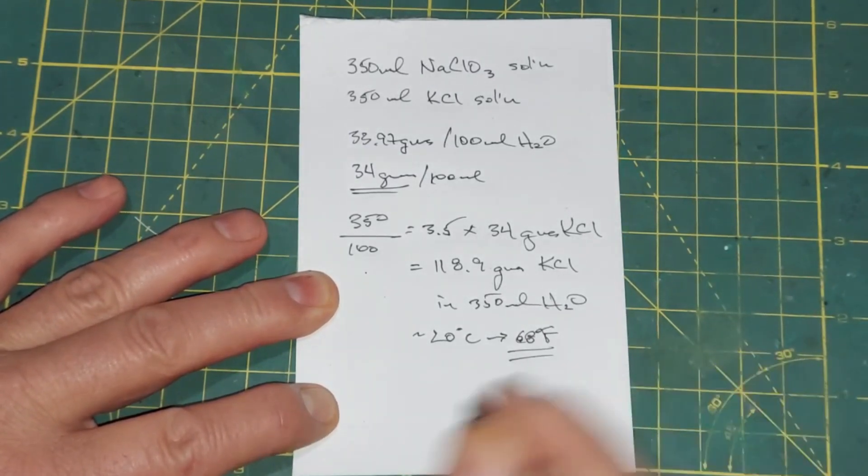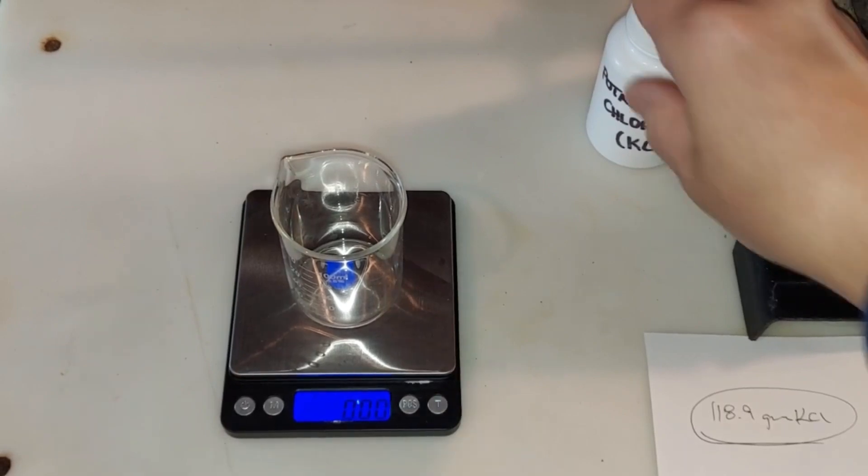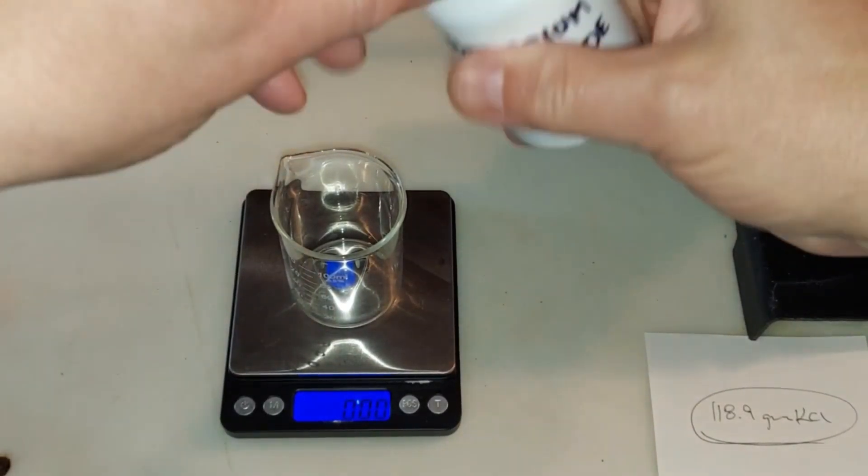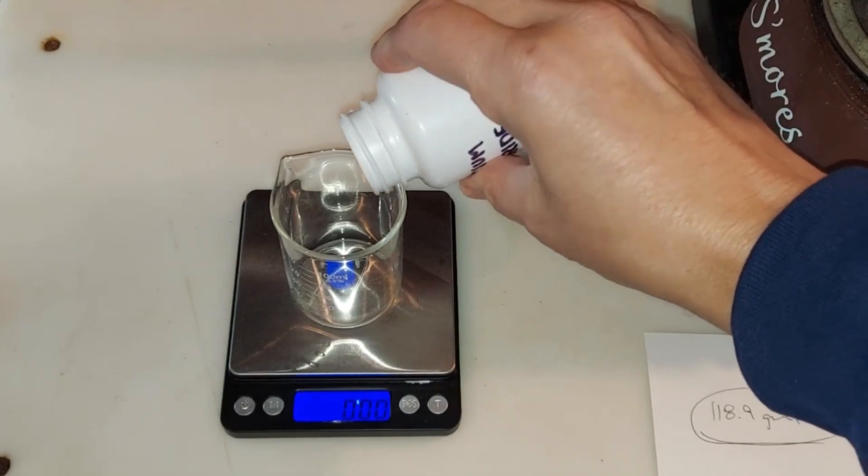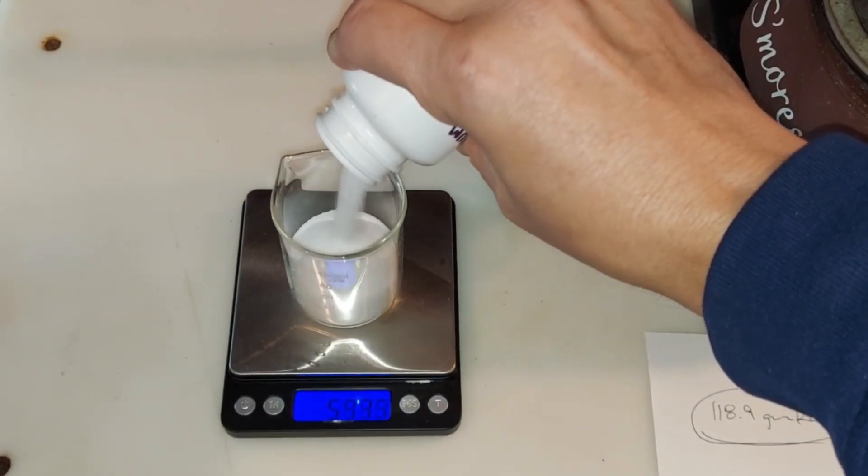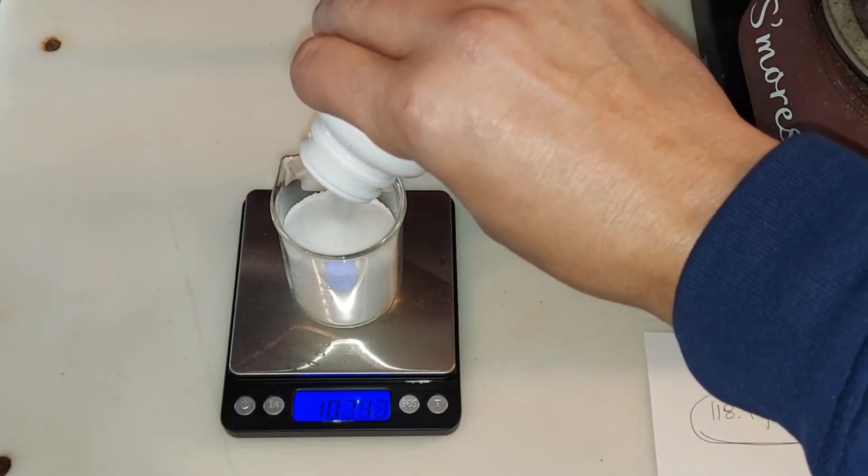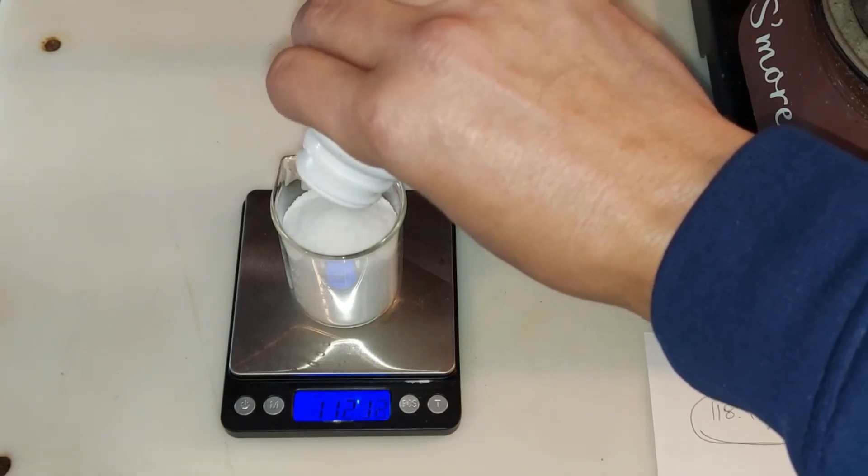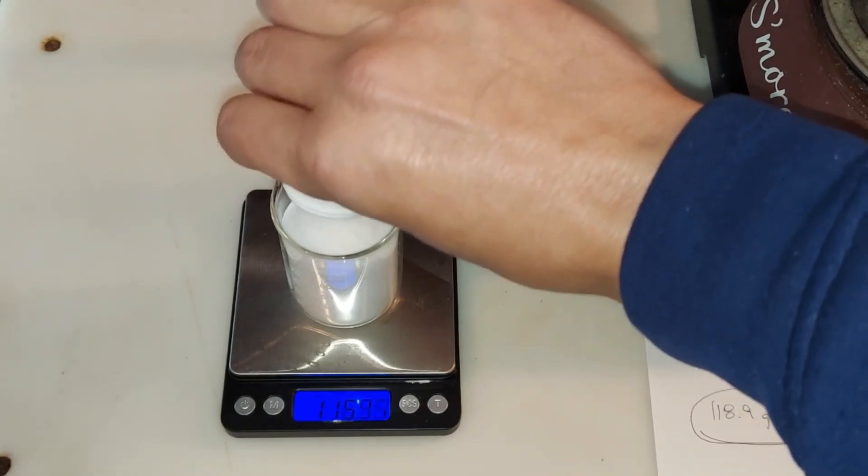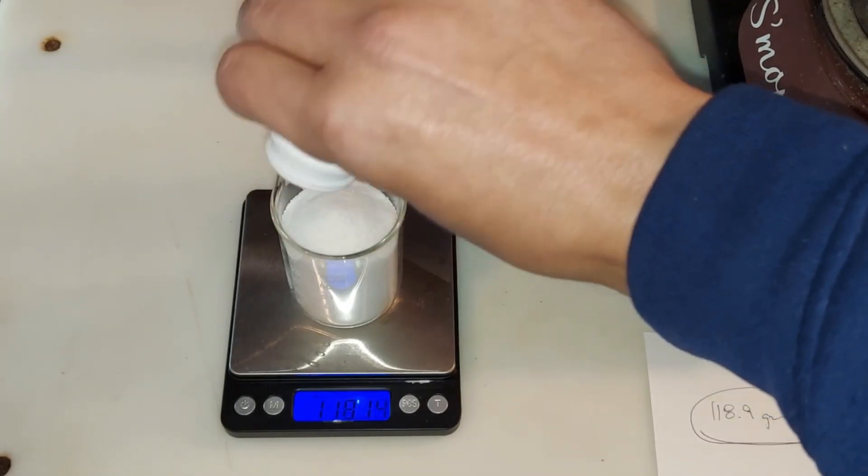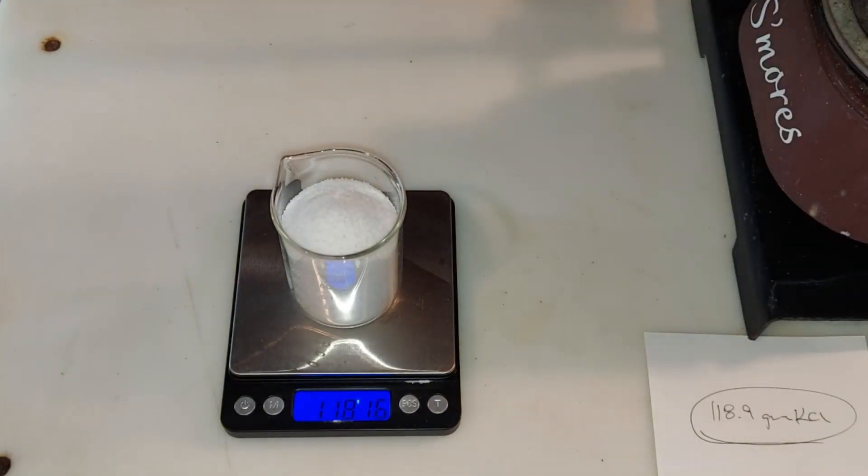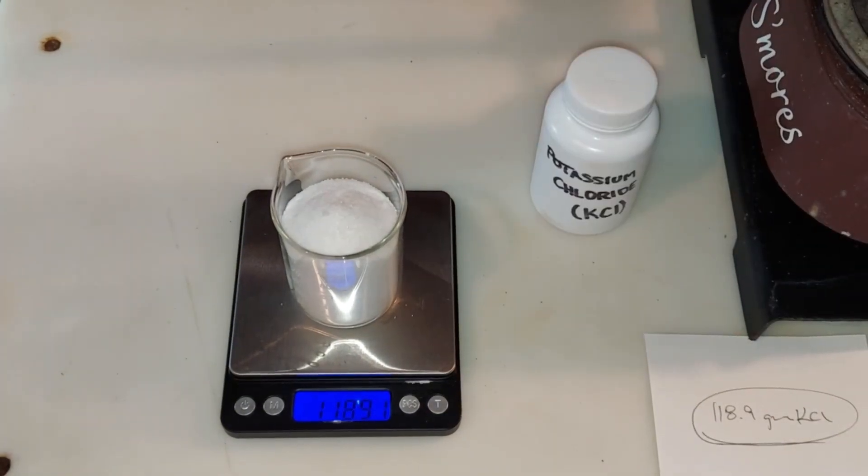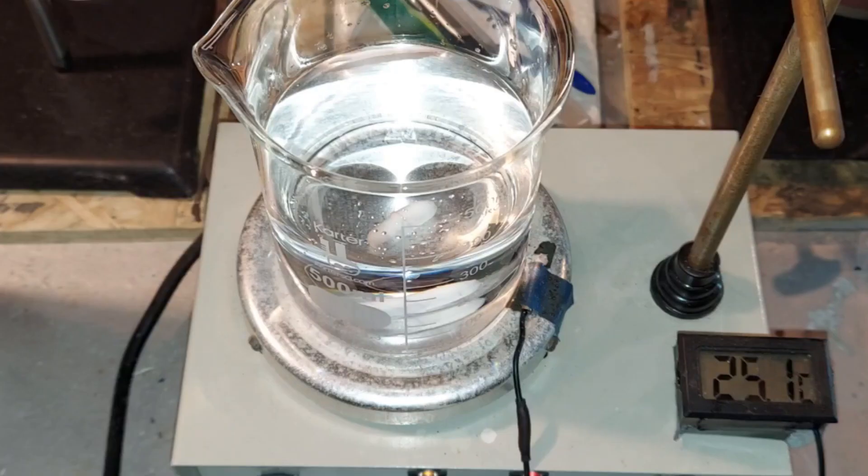We need 118.9 grams of potassium chloride. It emptied out. Oh my gosh, at 118.16 grams I added a touch more from another source, and we have 118.91 grams, and I'm gonna call quits right there.